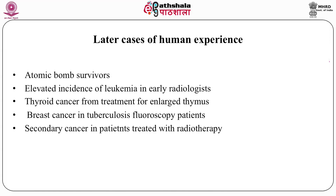Thyroid cancer was found from treatment of enlarged thymus. The thymus gland is close to the thyroid, and radiation was given for enlarged thymus even when non-malignant, and later increased incidences of thyroid cancer were found in those patients. Similarly, breast cancer occurred in tuberculosis patients who underwent fluoroscopy. When those patients underwent fluoroscopy as a screening procedure, some developed breast cancer, because in early days the dose received by patients during fluoroscopy was not properly known nor were the effects. As a result, patients may have received higher doses and some later developed breast cancer.